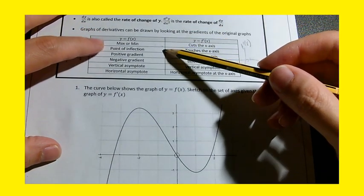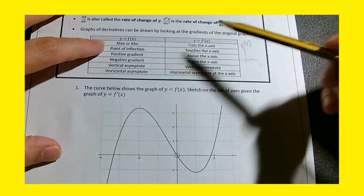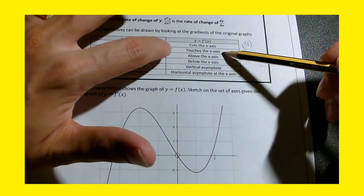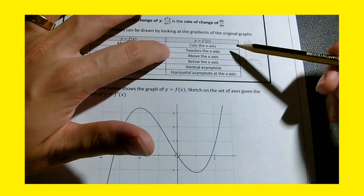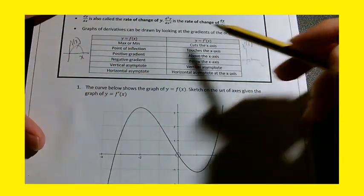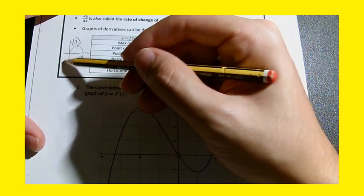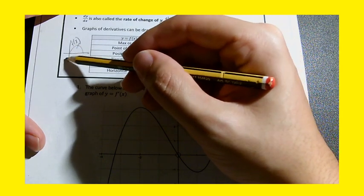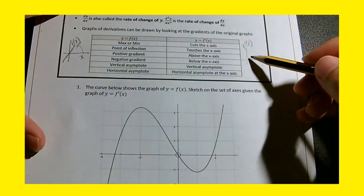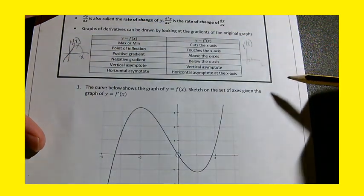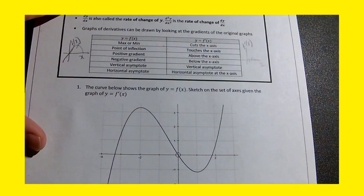If we have a point of inflection, then that would be represented as touching the x axis. It won't cut the x axis, it will just touch it. Imagine we had a cubic. If you have a point of inflection, it will just touch the x axis at that point. We'll see an example of this.